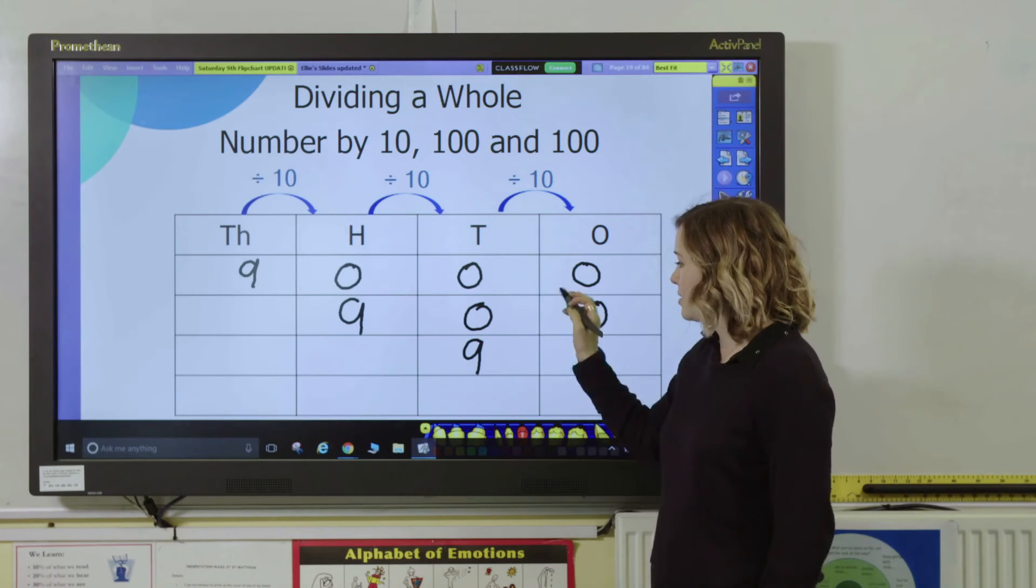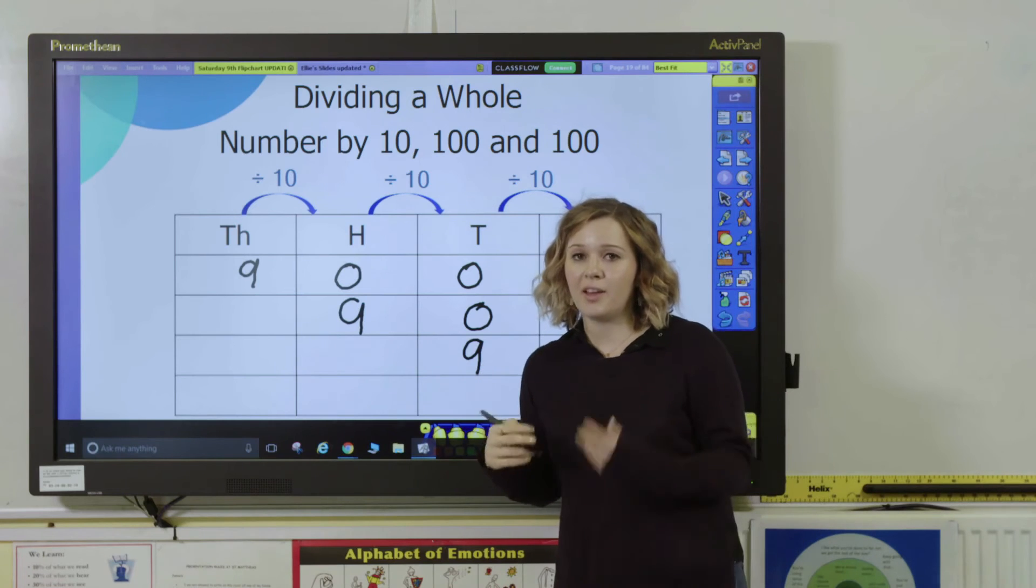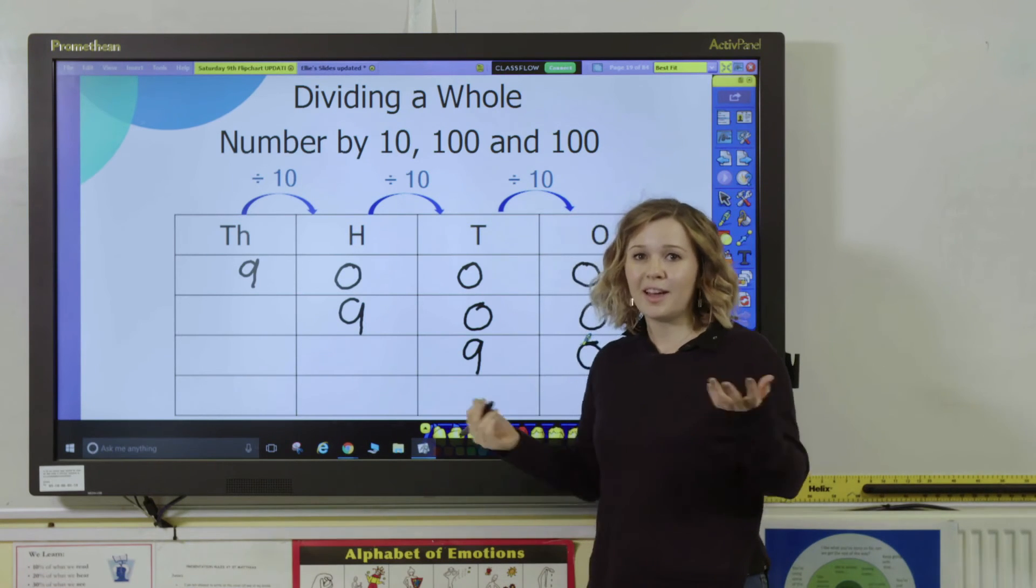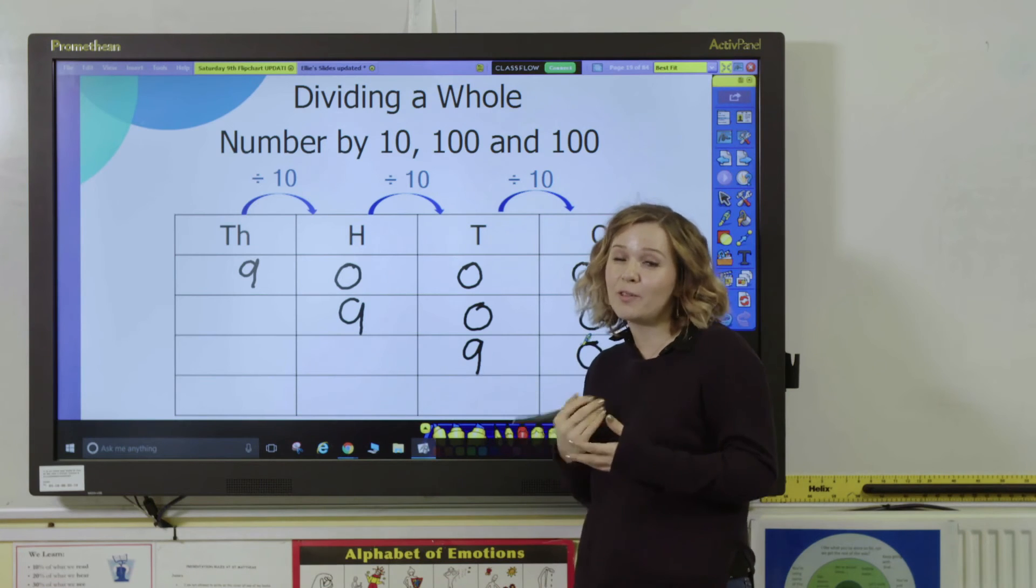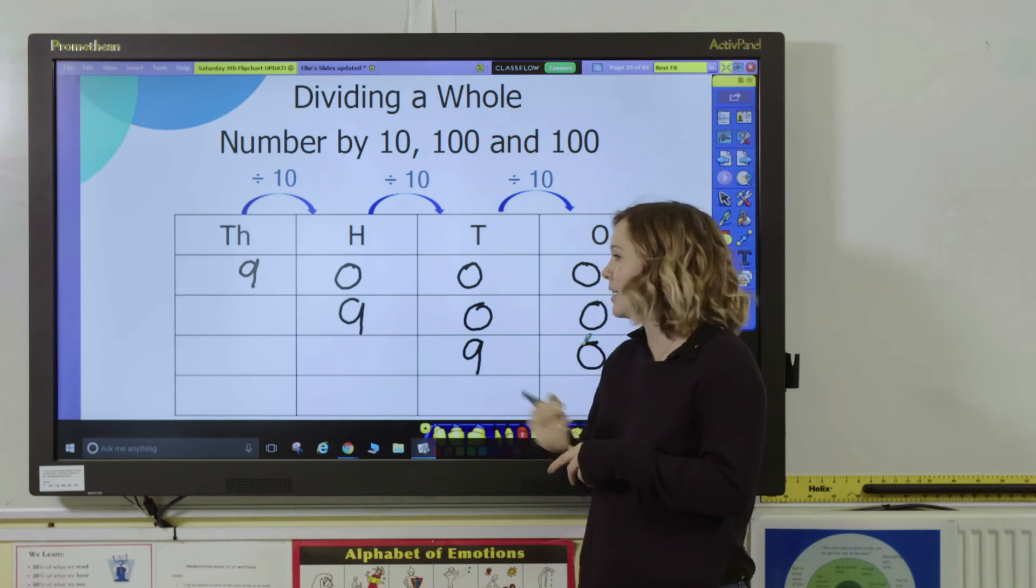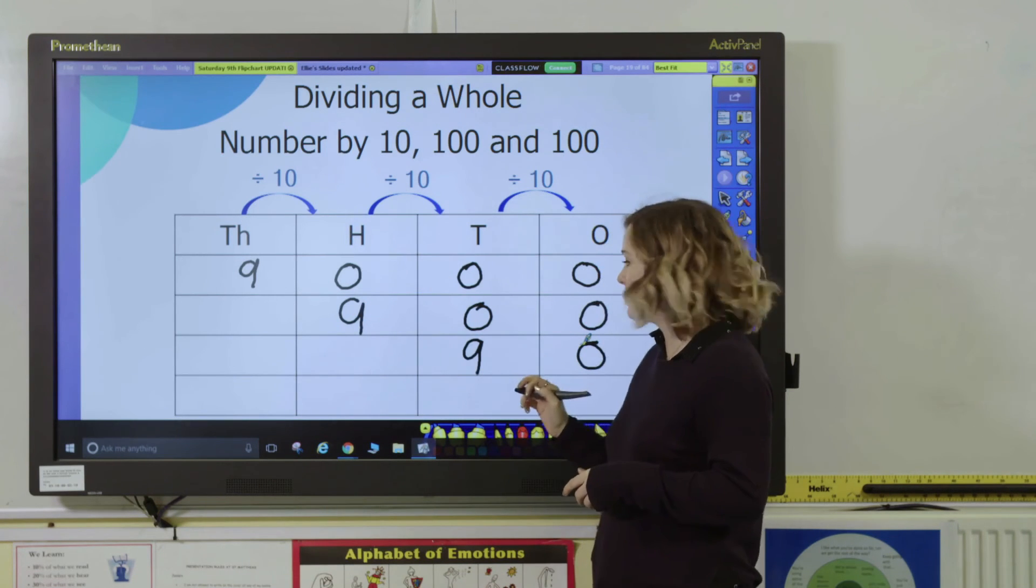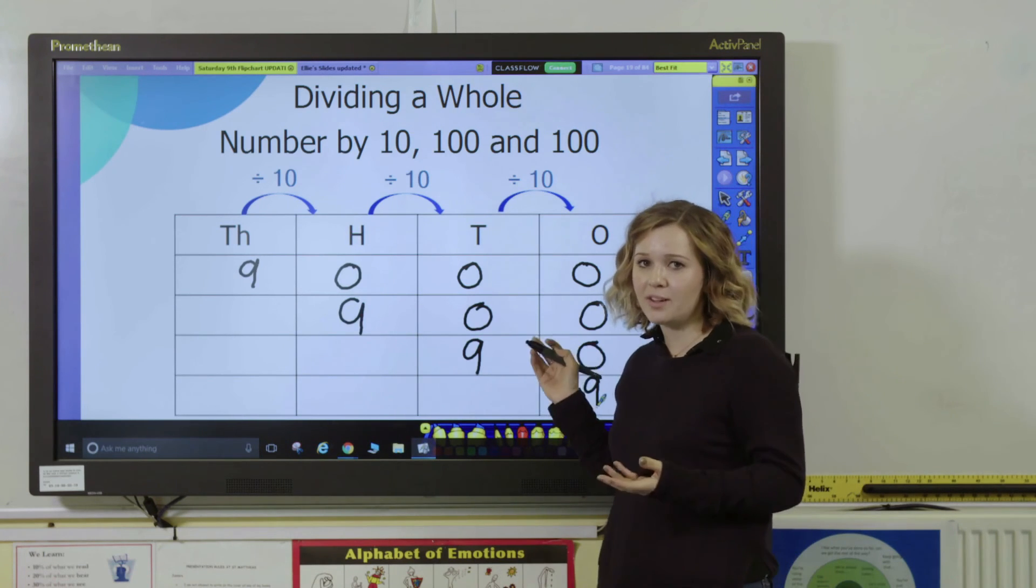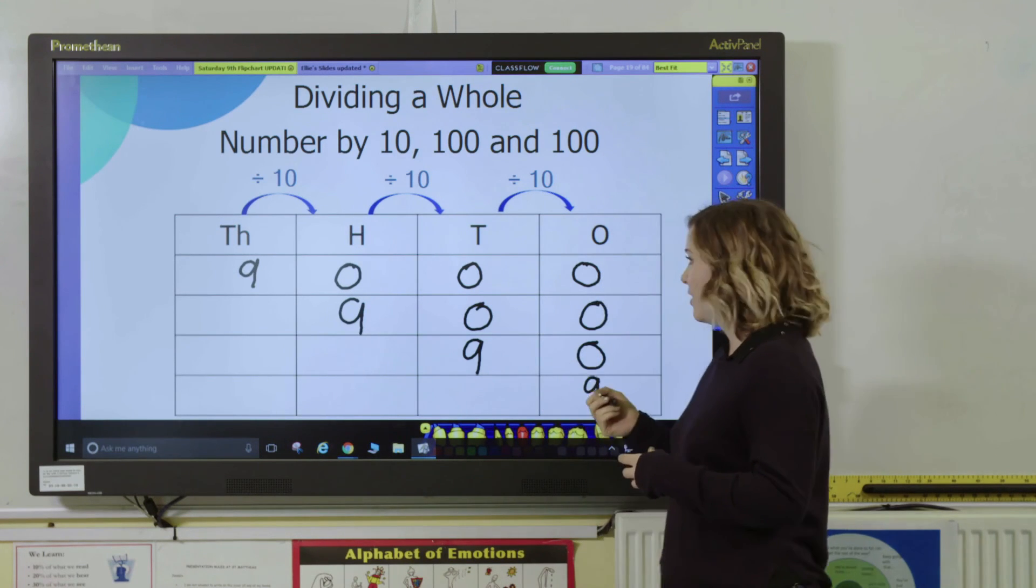So nine thousand divided by a hundred is ninety. And then the last step we're going to go to in this video is dividing by a thousand. So as you can see this pattern, and hopefully pupils will start to understand what's happening. The digit's going to move three spaces to the right this time, so it's going to come down into our ones column. So nine thousand divided by a thousand is nine.